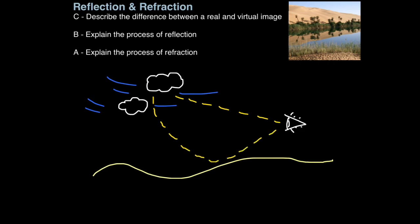As a result, an image of the sky is produced on the ground. We are actually seeing this image, but the light appears to be coming from here because of the bending light ray. This is therefore called a virtual image. It's not real, the light appears to be coming from somewhere where it isn't.